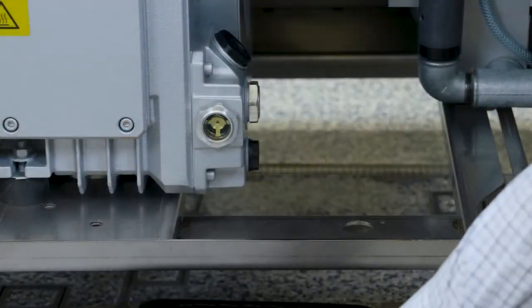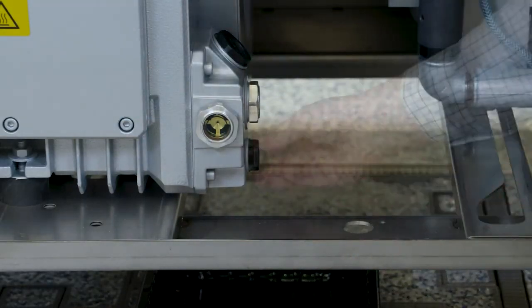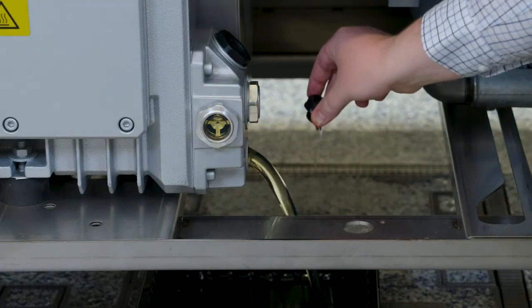Place a container to collect the used oil under the drain opening. Unscrew the bottom oil plug. Let the oil drain completely.